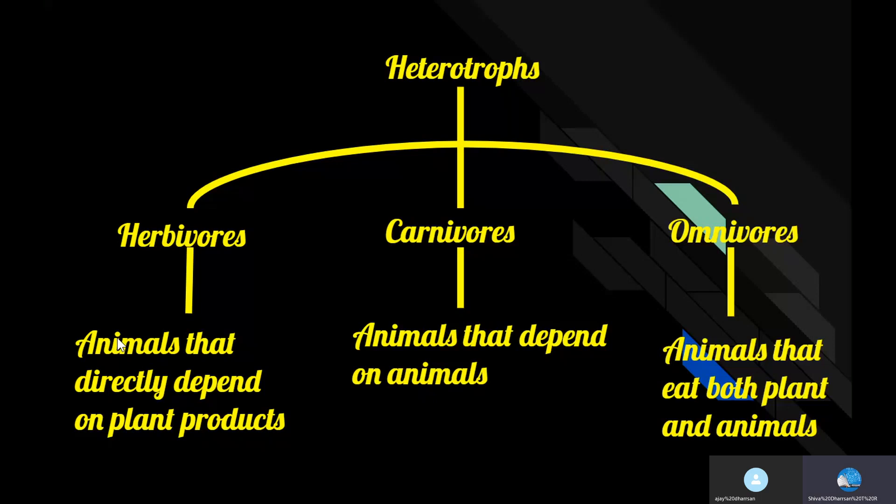Some animals directly eat plants or plant products; these animals are called herbivores. Whereas some animals do not feed on plants directly — they feed on other animals — and those are known as carnivores. Omnivores are animals which eat both plants and animals.